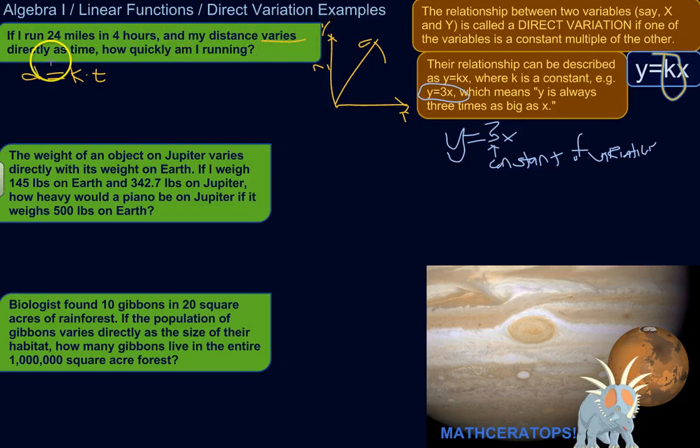So we know that distance varies directly as time, so we can set up this equation initially. Now the question is, how quickly am I running? So let's set up the equation, and then I'll show you how that connects.